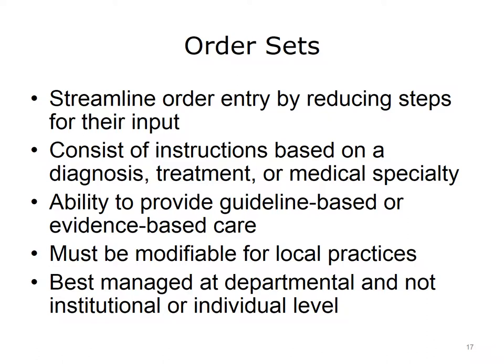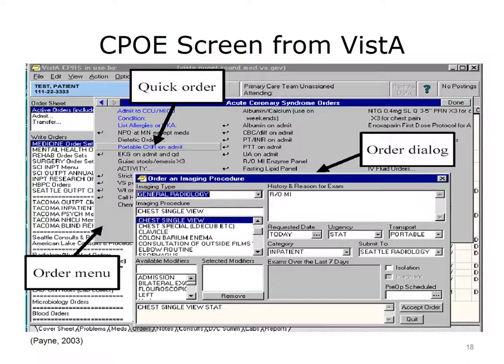When order sets are implemented, there is the ability to provide better guideline or evidence-based care, although order sets must be modifiable for local practices. The consensus is that they are best managed at the departmental level — not for an entire institution, nor for every single individual. Ideally, departments such as family medicine or orthopedic surgery would communicate about consensus practices and build those into the order sets. This slide shows what a CPOE chest X-ray order screen might look like from the VISTA system. The lab exercises accompanying this lecture will provide the opportunity to create an order set similar to this.